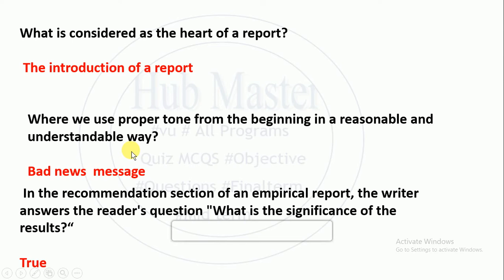Bad news messages use a proper tone, giving a reason in an understandable way. In the recommendation section when you write a report, you give recommendations in one or two lines. When you write an empirical report, the writer answers the reader's questions — what is the significance of the result? This is true.